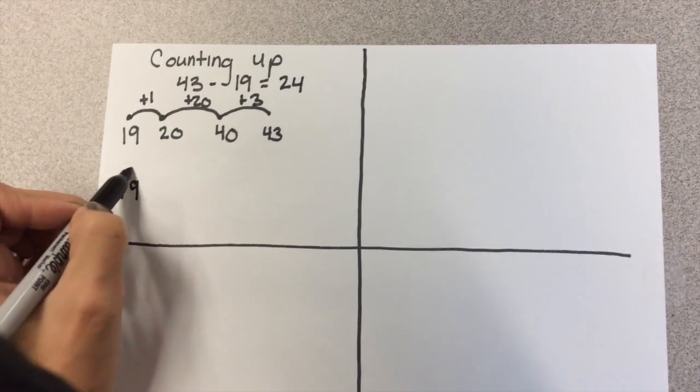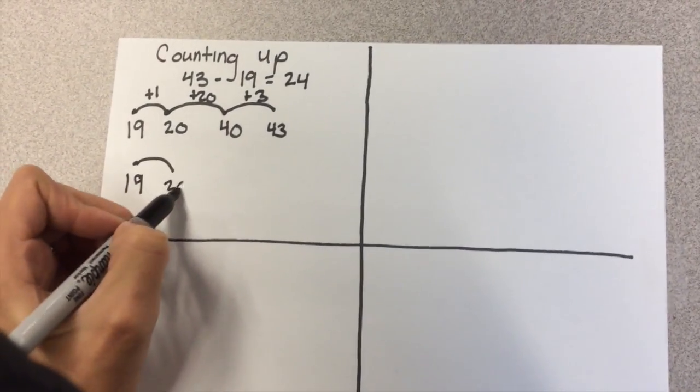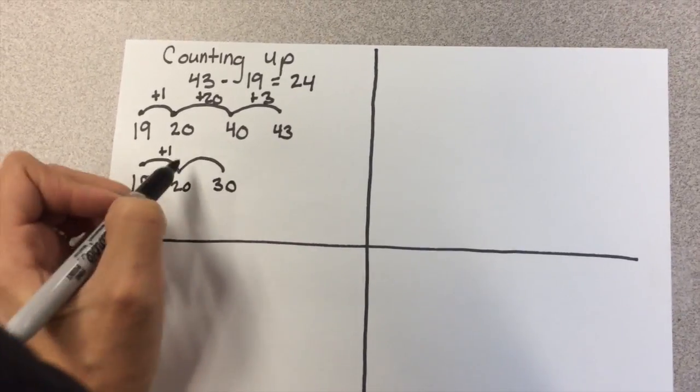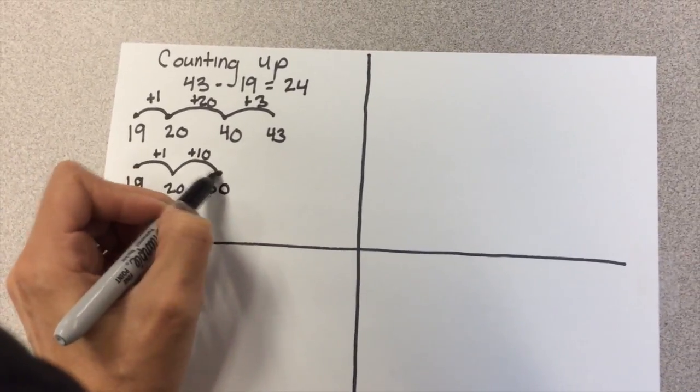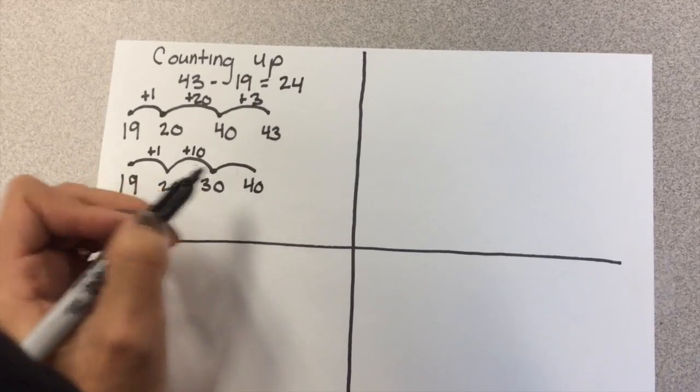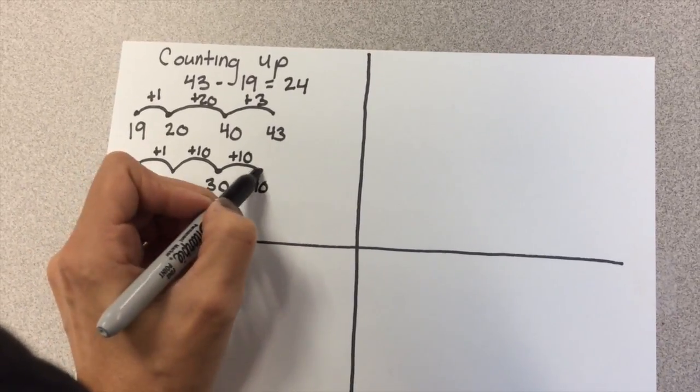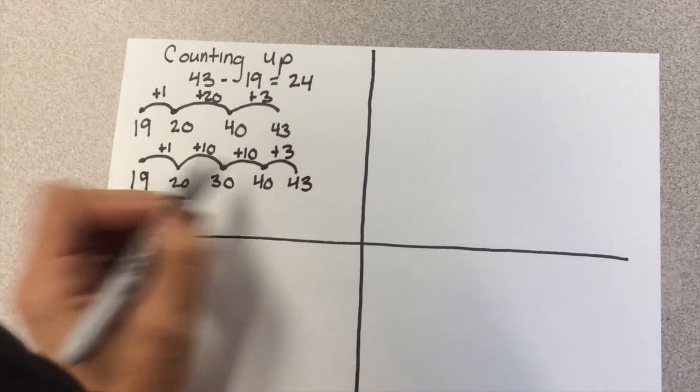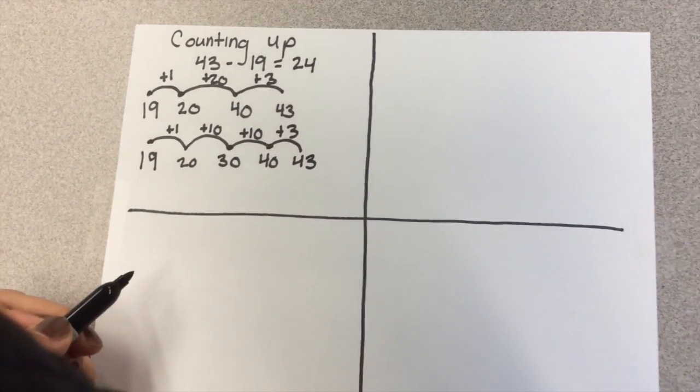Other students might see it from 19 to 20, from 20 to 30, from 30 to 40, and from 40 to 43. But as you can see, they would still end up with the same answer each time.